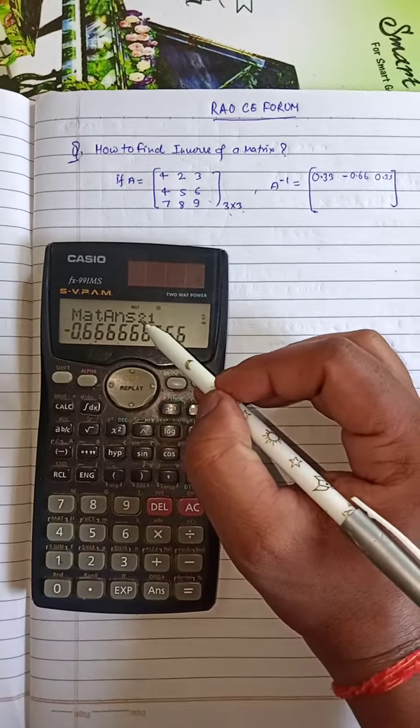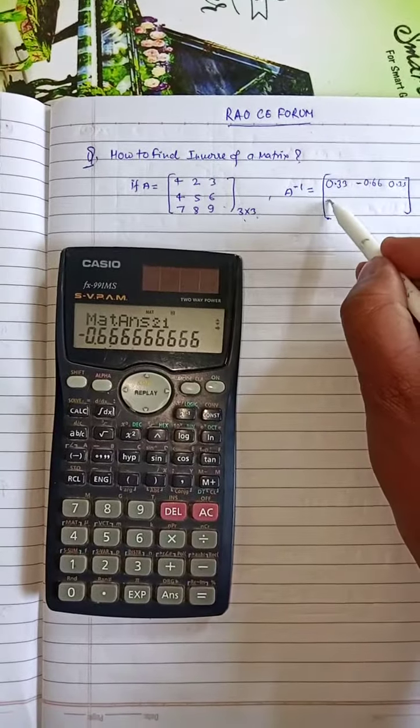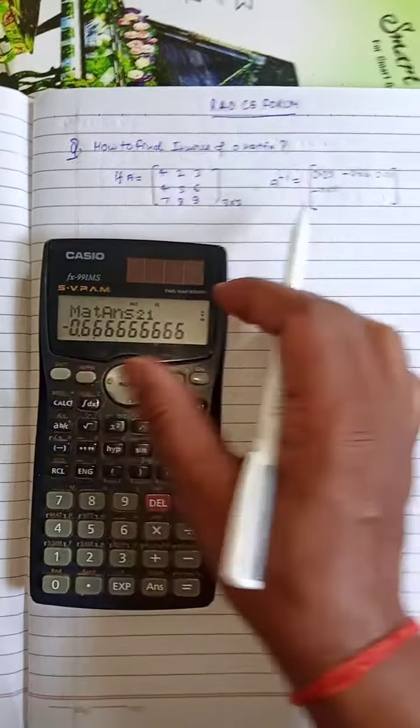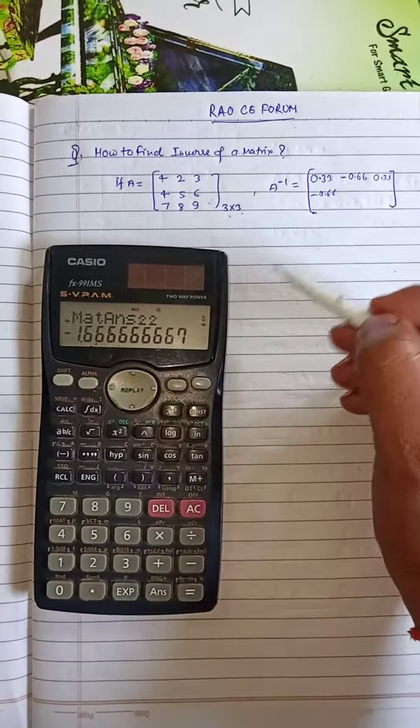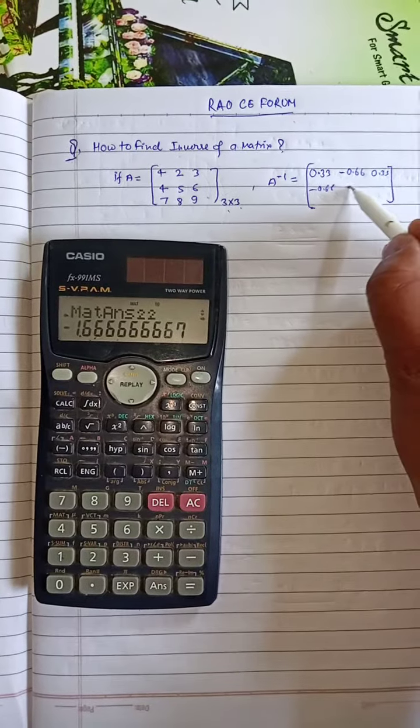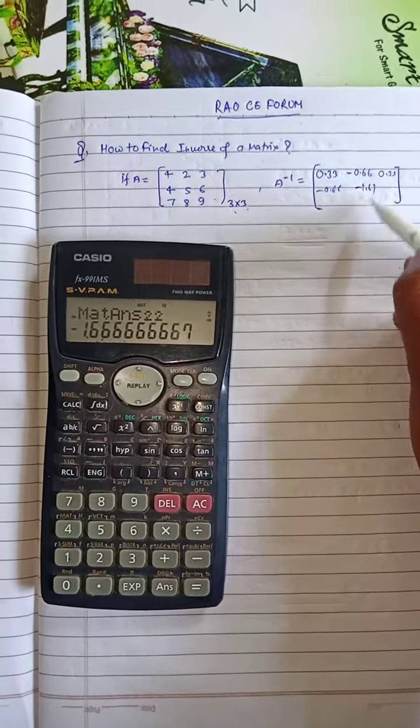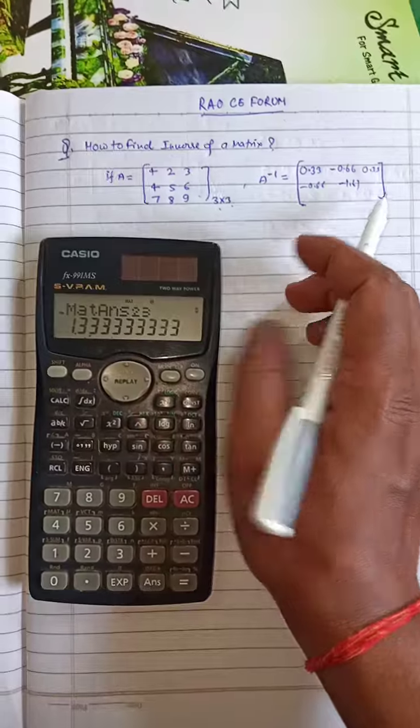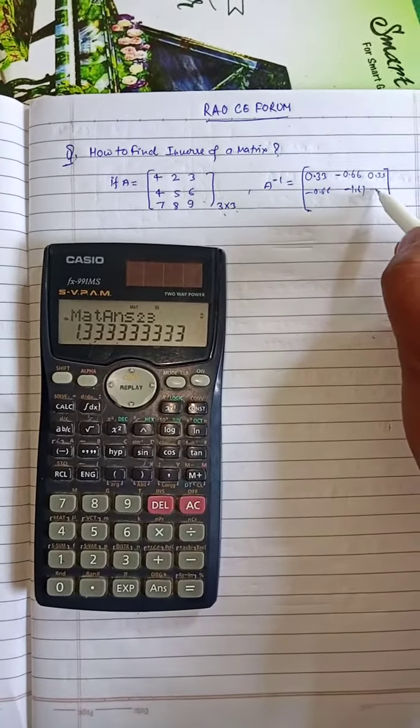Second row, first column: minus 0.66. Second row, second column: minus 1.67. Second row, third column: 1.33.